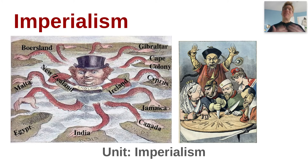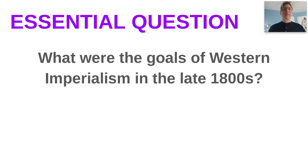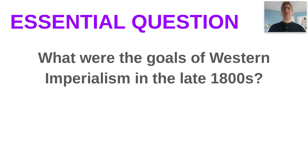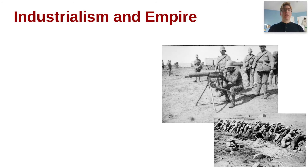Today is going to be focused on what it is that we're really talking about during this time period. Our essential question is: what were the goals of Western imperialism during the late 1800s, drifting into the early 1900s as well?